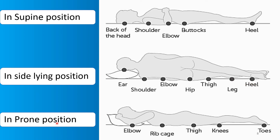If the patient is in prone position, bed sores can develop at the elbows, rib cage, and breast area, in addition to thighs, knees, and toes. So depending on the patient's position, different pressure sites are at risk for bad sores.